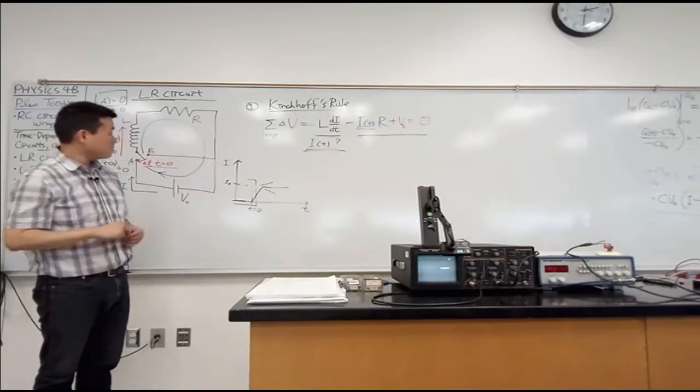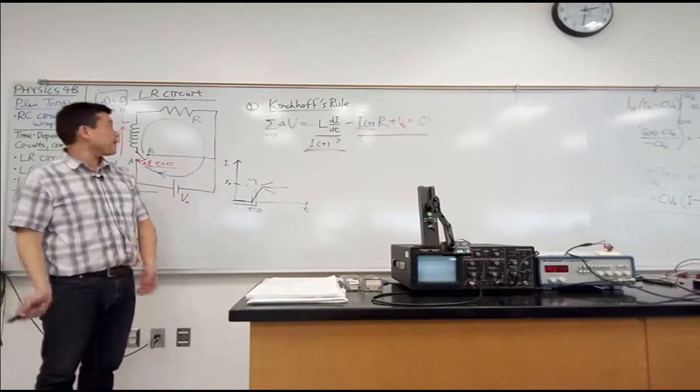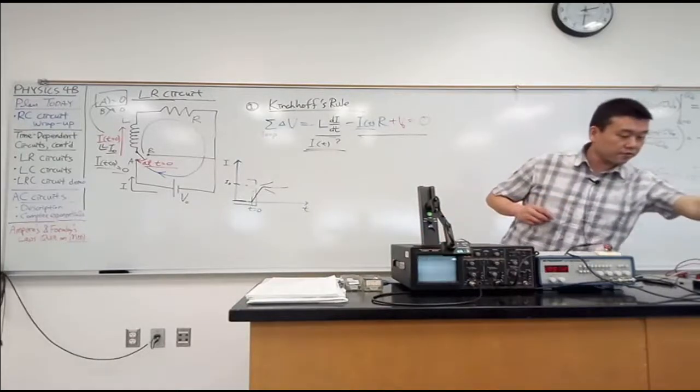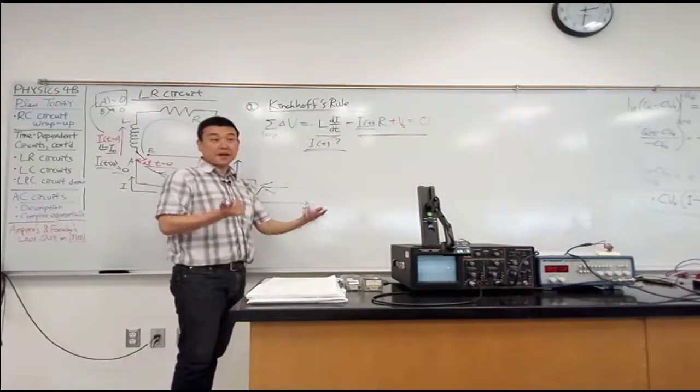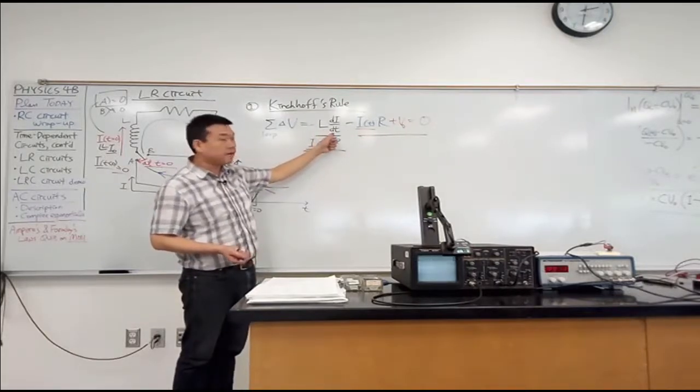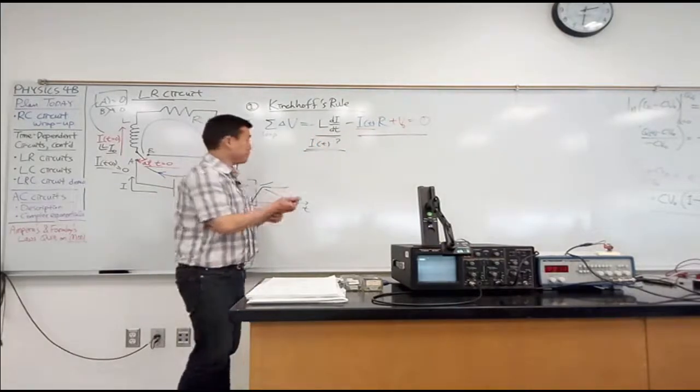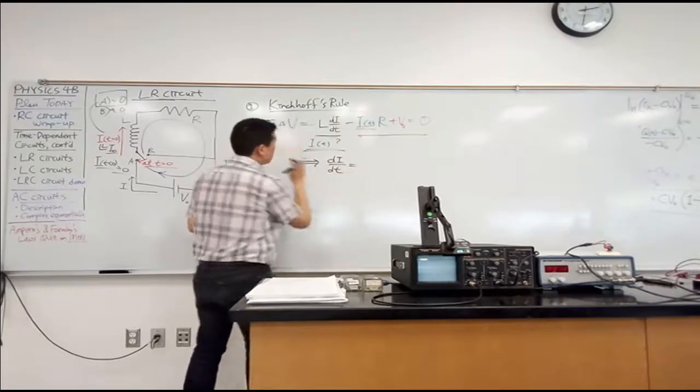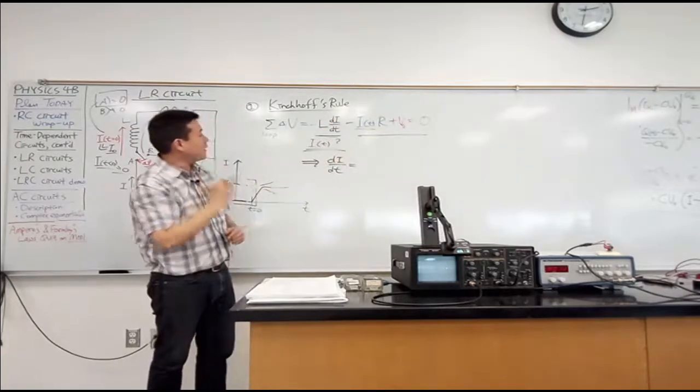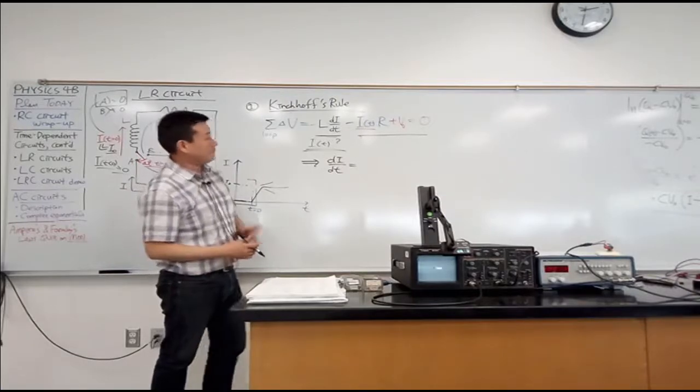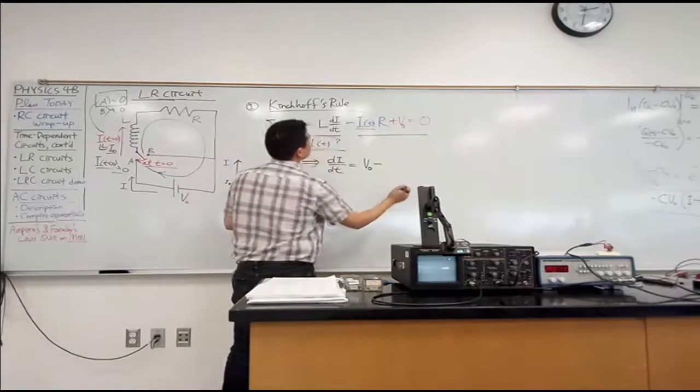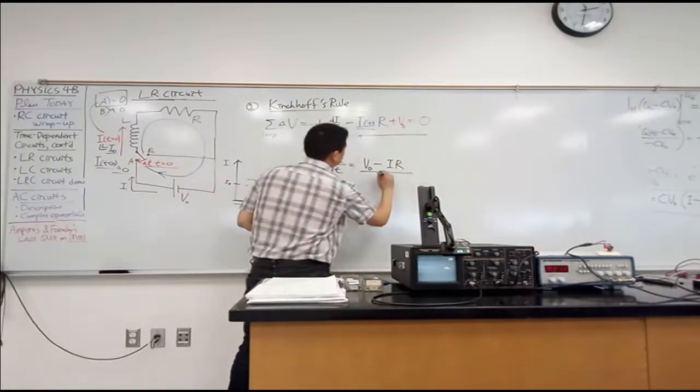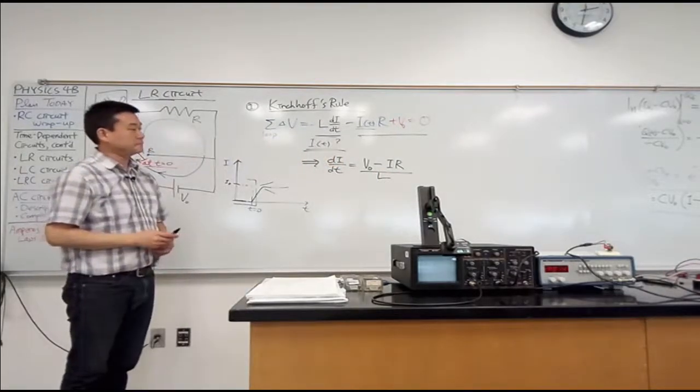And once I know that, then I can find out anything else I want. I can find out the voltage across inductor, whatever. So let's go through the steps to try to do that. And I'm going to do the same thing I did last time. Solve this for the highest order derivative term. So I'm going to solve it for di dt, that's equal to, so I move this over, divide up by L. So I'm left with V naught minus IR, and I divide it through by L.